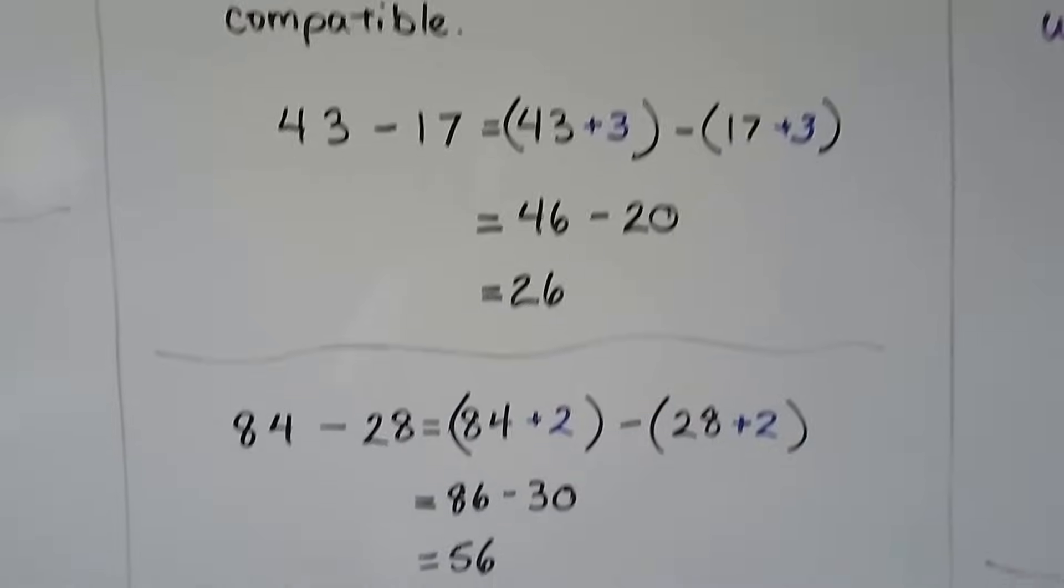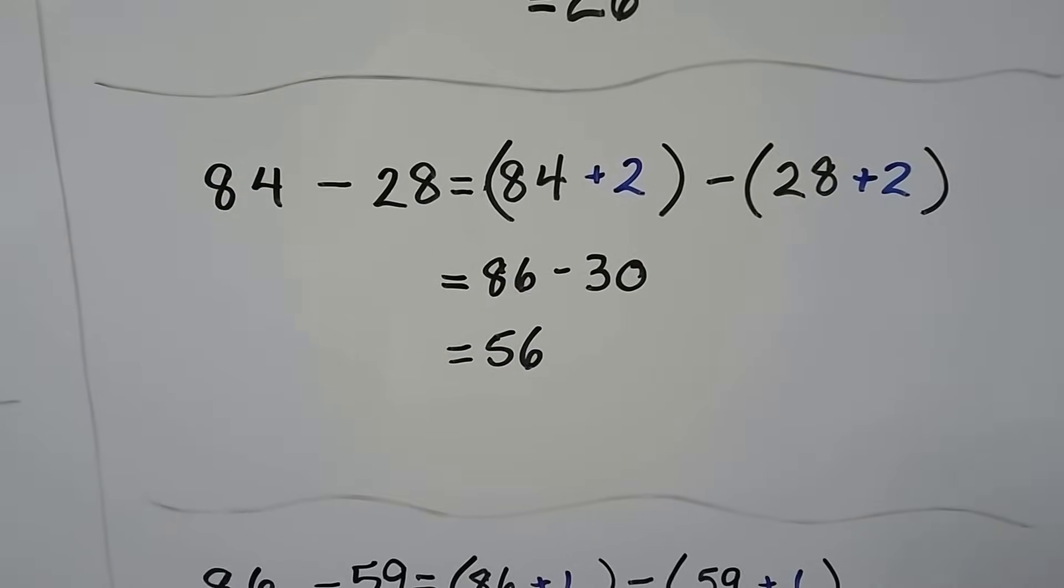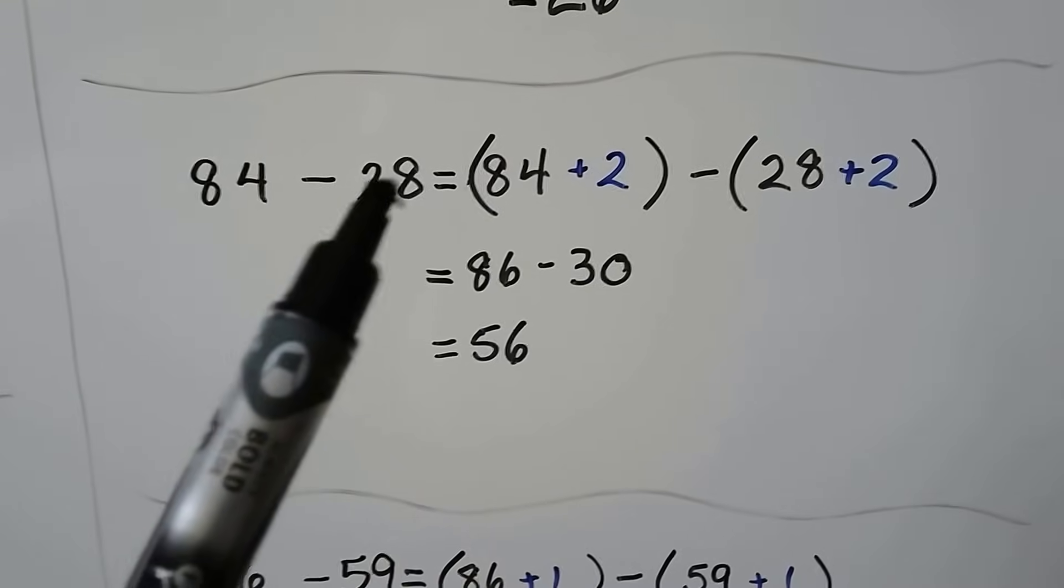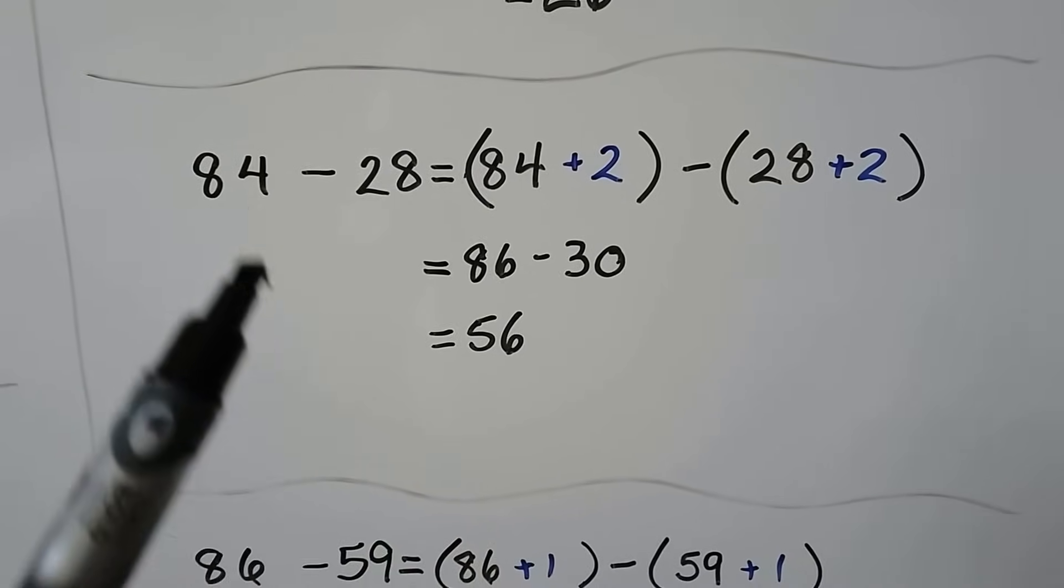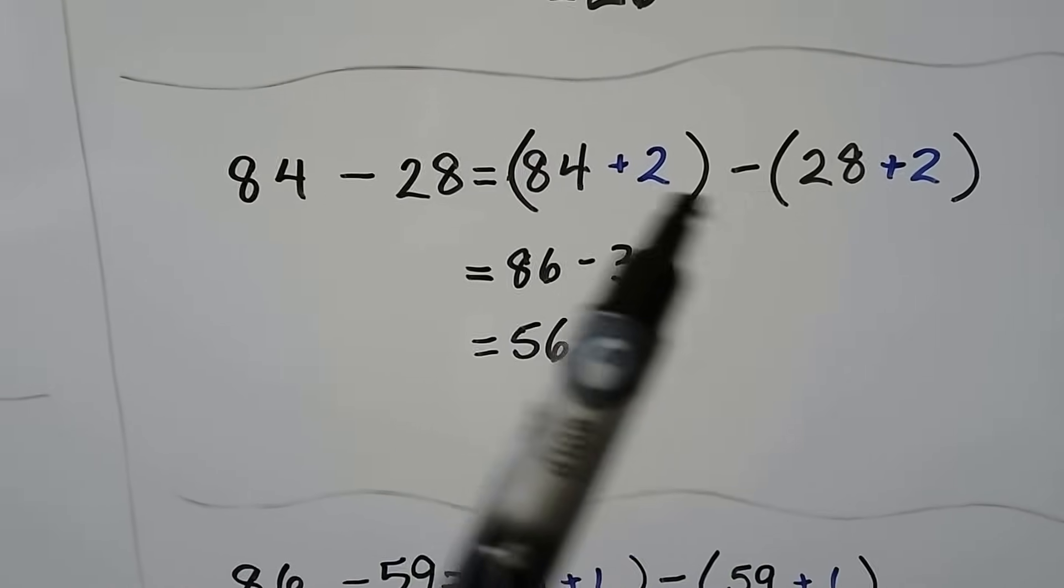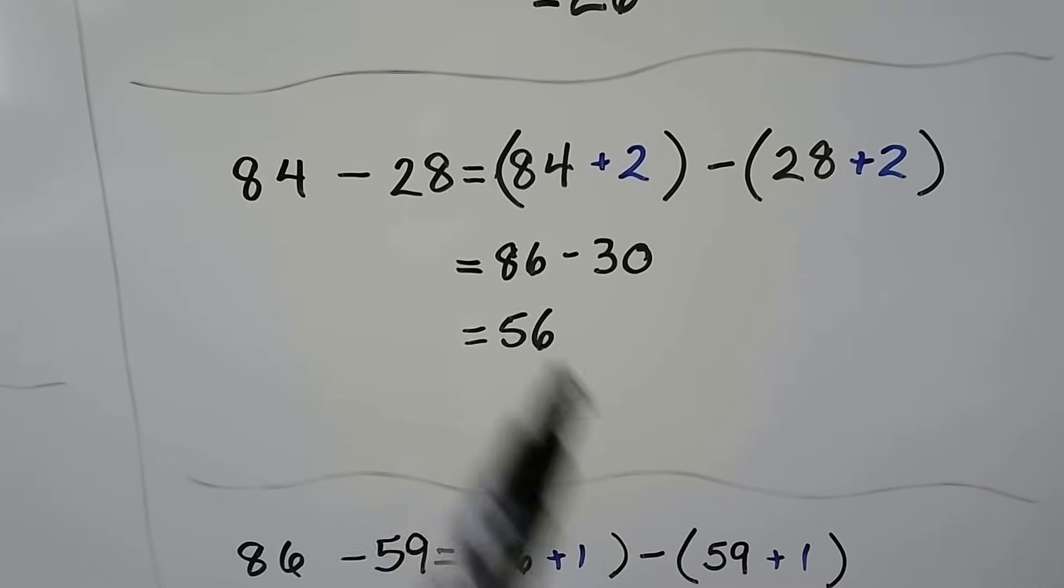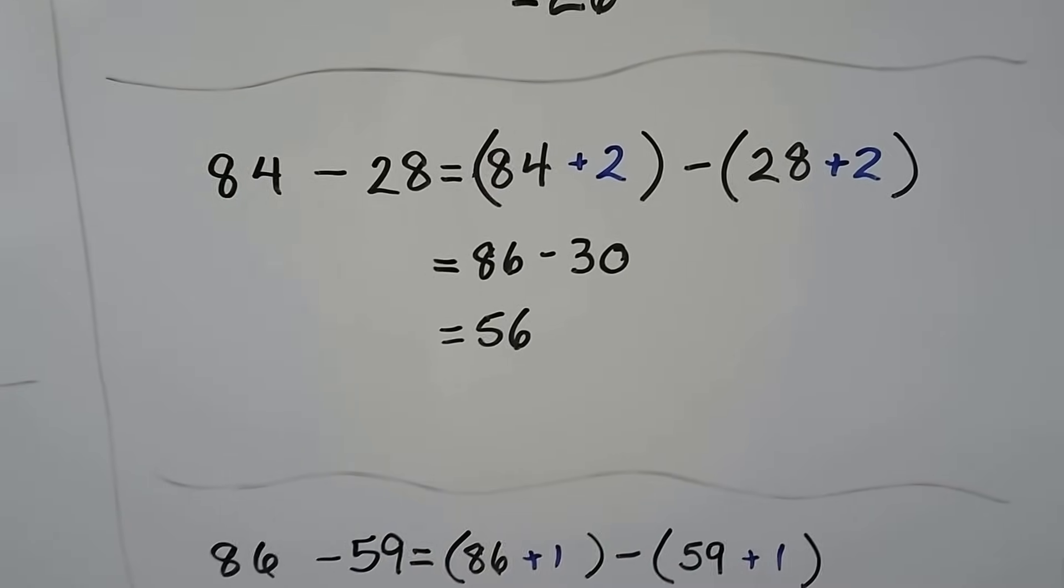Let's try another one. We have 84 minus 28. This would be 30 if we just had 2 more. So we can add 2 to this side and 2 to this side. We add 2 to both of them. Then we get 86 minus 30. That's much easier to do with mental math. That's 56.